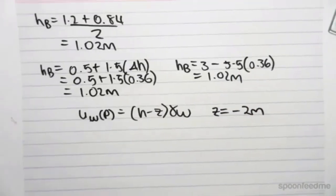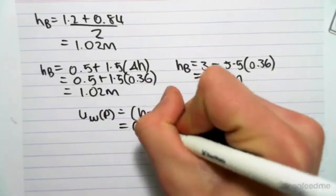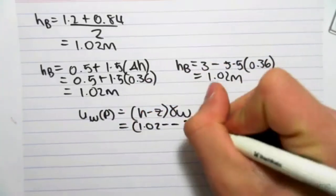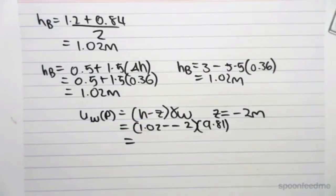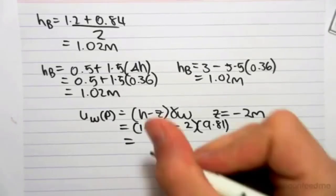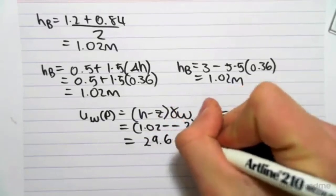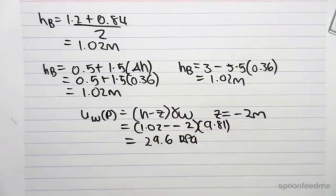Then we can plug in all our values. H is 1.02 minus minus 2 times 9.81. We can get a pore water pressure of 1.02 plus 2 times 9.81, which will be 29.6 kPa.